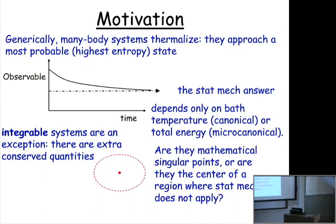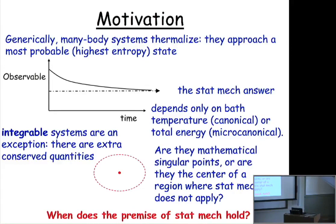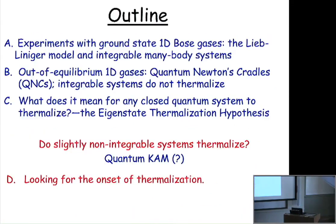The question I'm really trying to ask is: what happens around the integrable point? Is it singular? Is that the only place where quantum statistical mechanics doesn't apply for an isolated system? Or is there some region around that singular point where you still can't trust statistical mechanics? That's the big-picture question we're trying to answer.